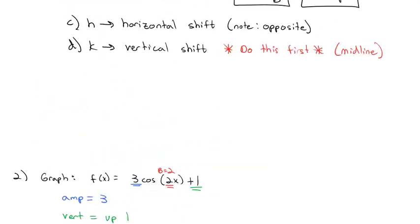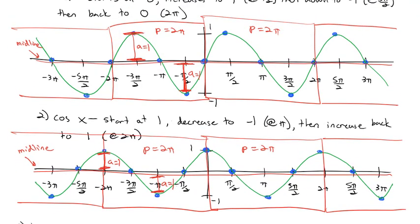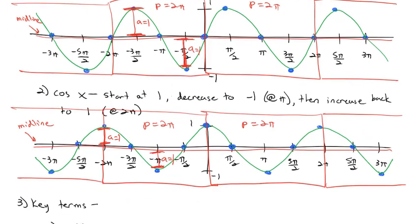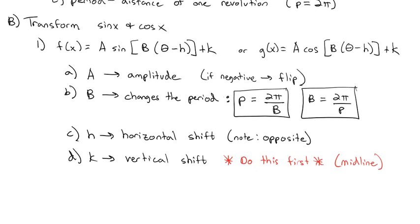Today there are two big concepts to know. First, you should know what the sine and cosine graphs look like — sine starts at the midline and increases, while cosine starts at the top or bottom. Second, you should be able to transform sine and cosine based on the amplitude, a change in period, a horizontal shift, and a vertical shift. Take a look at the homework to practice, and let me know if you have any questions.